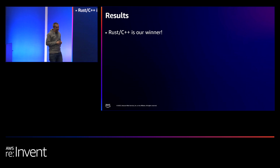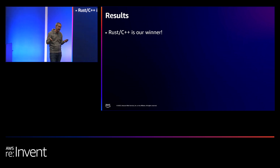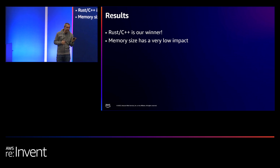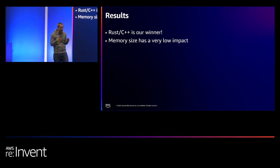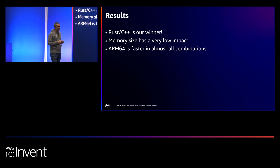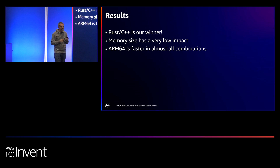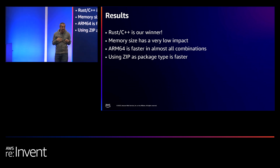Let's look at the results. Rust and C++ are the winners — great news if you're a Rust fan, because Rust allows extremely small binaries with almost no memory allocation. I tested different memory sizes but the impact is very low, because between 128 MB and 1024 MB the number of vCPUs doesn't change that much, and for a hello world Lambda function there's no allocation, so memory size doesn't really matter.